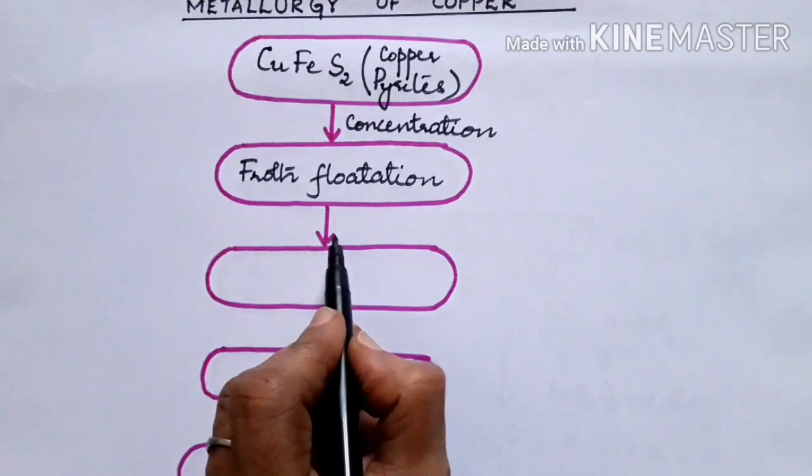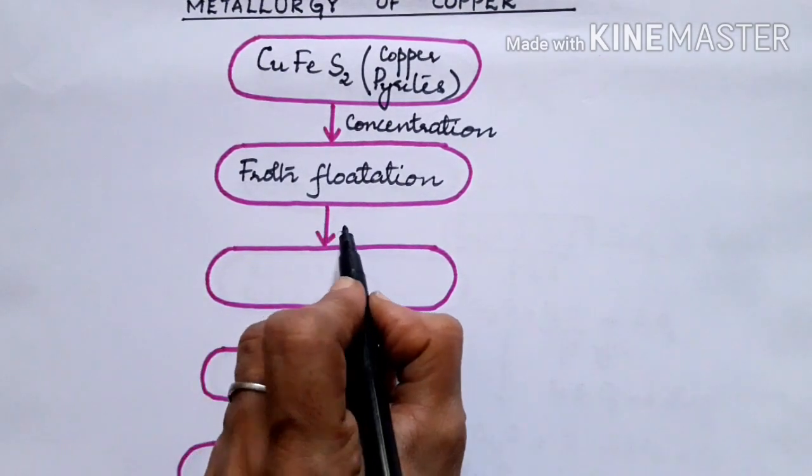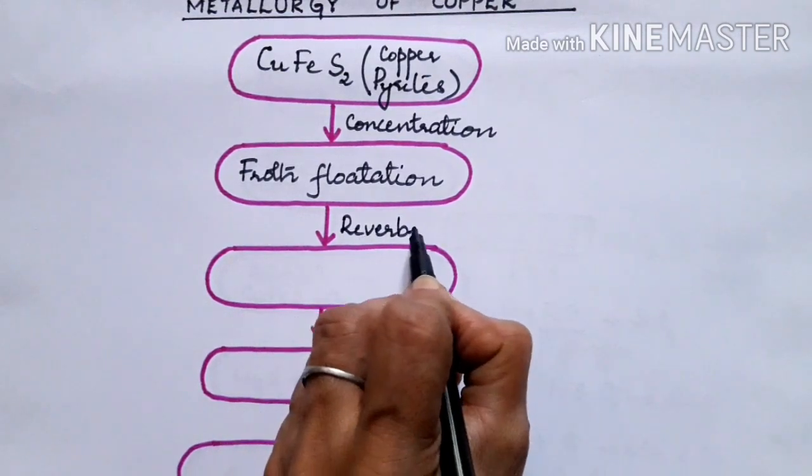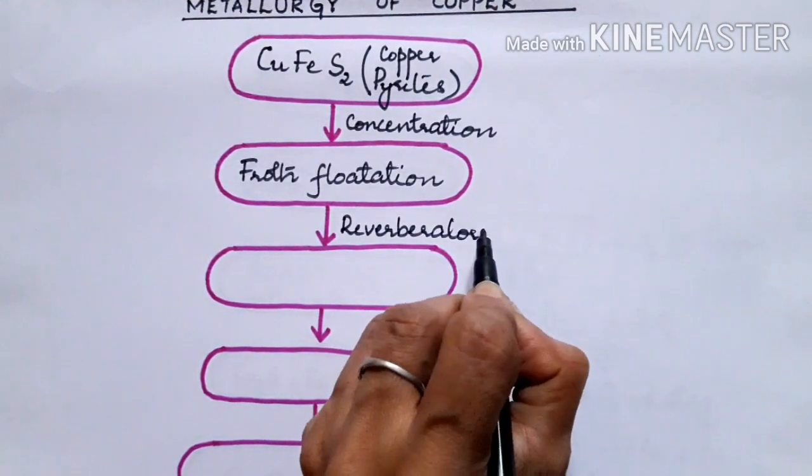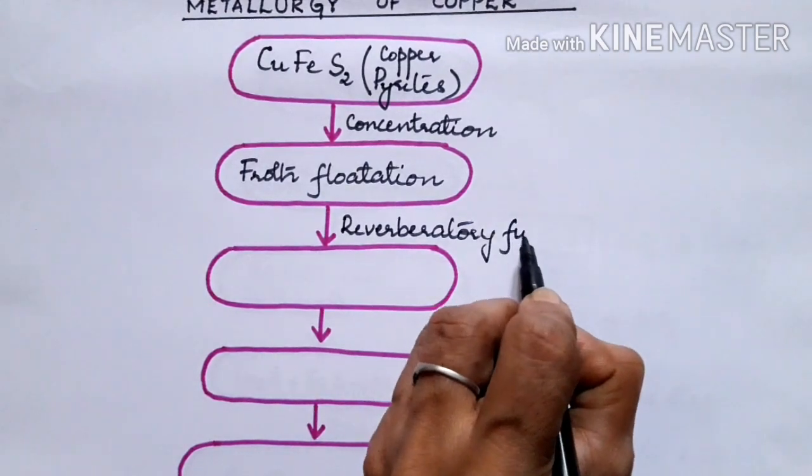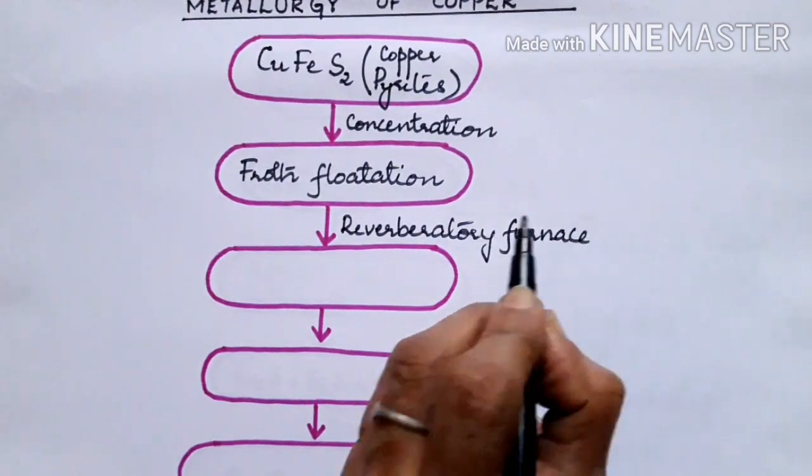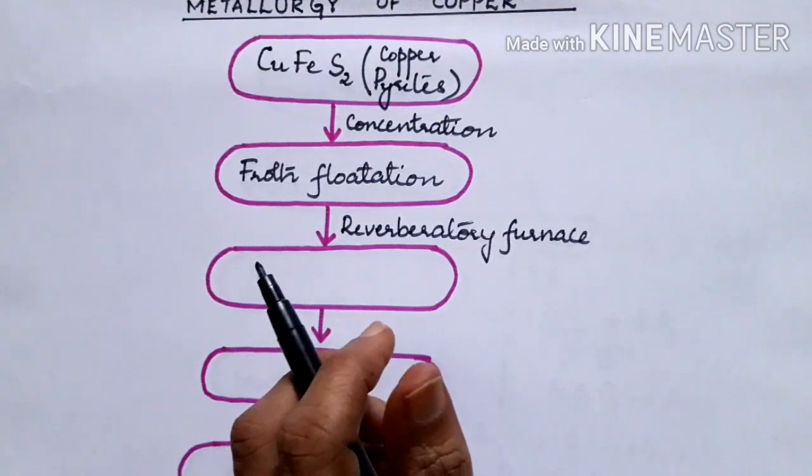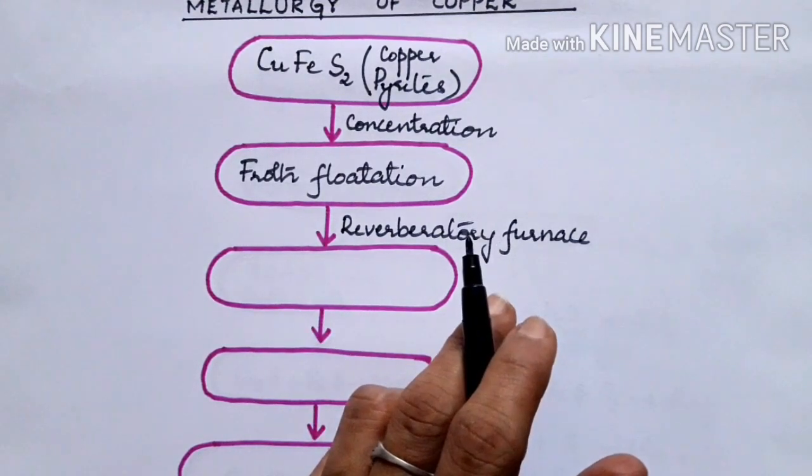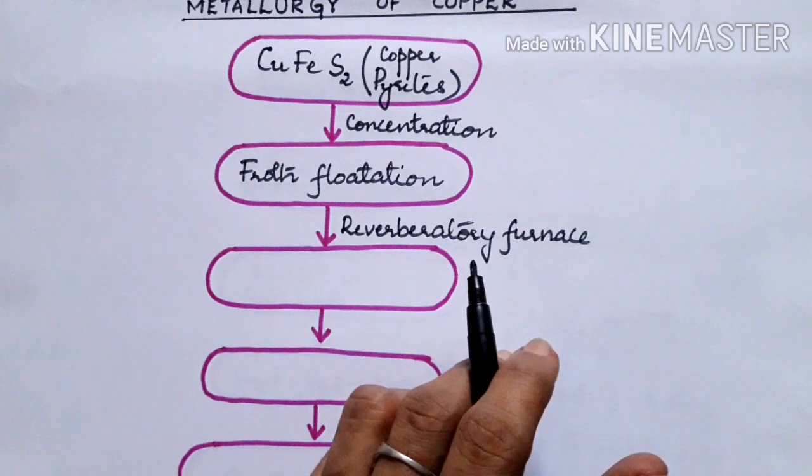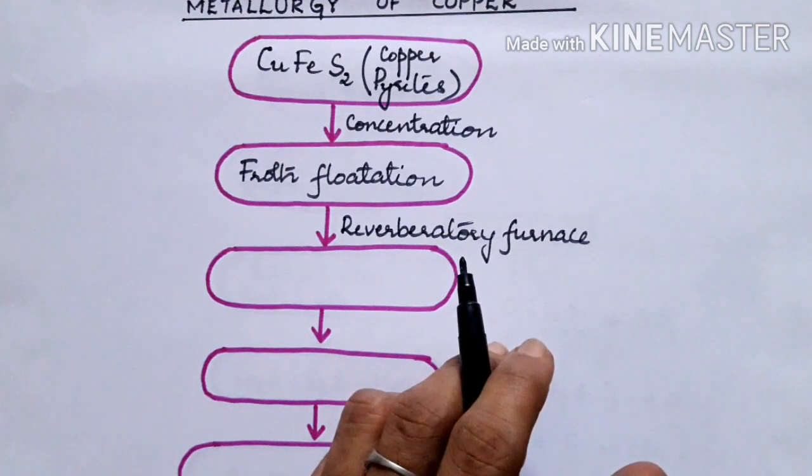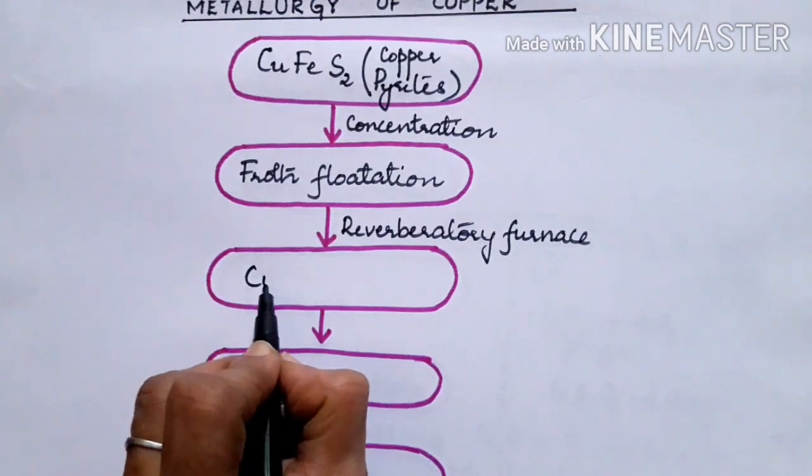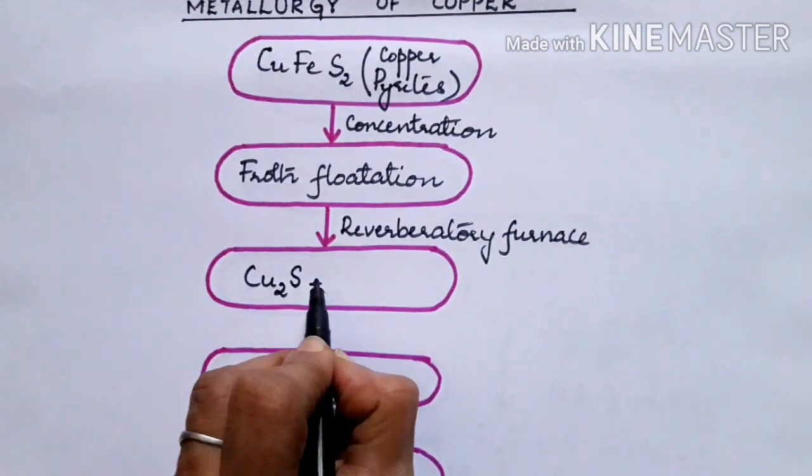After getting it concentrated, we are heating it in a reverberatory furnace. What is a reverberatory furnace? It is a shallow furnace where heating is done, so that ensures the breakage of copper pyrites into Cu2S and FeS.